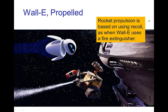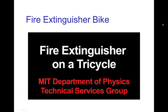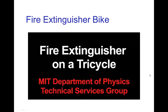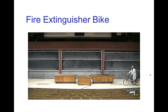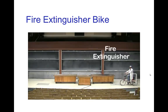Recoil is also the basis for rocket propulsion. In order to move in space, you discharge something in one direction and then make use of the recoil to move in the other direction. You see that in WALL-E when he's moving around in space propelled by a fire extinguisher, and using a fire extinguisher for propulsion is a classic physics demonstration — here shown by technical services at MIT with a tricycle with a fire extinguisher in the back.